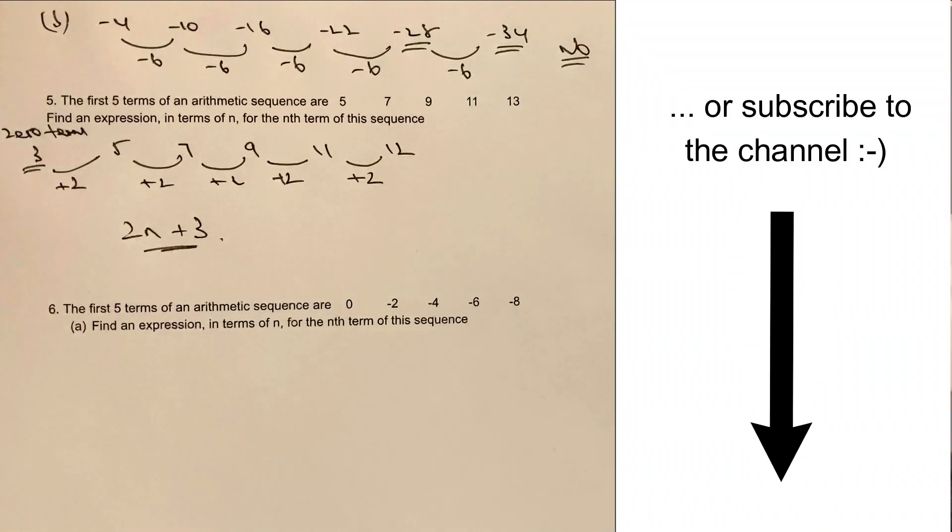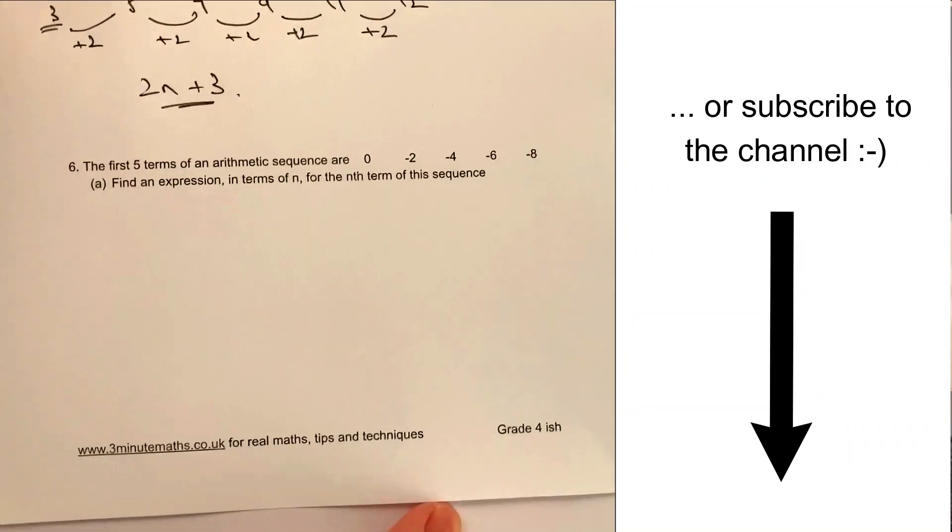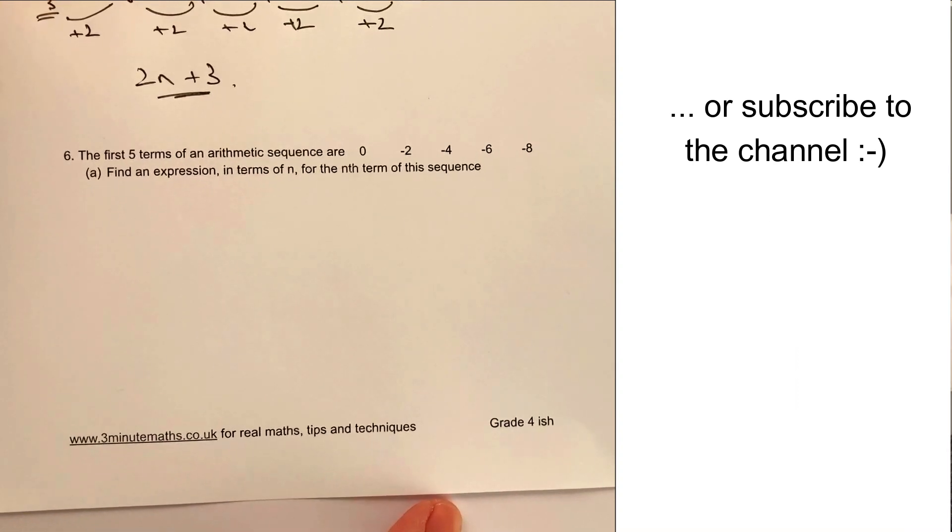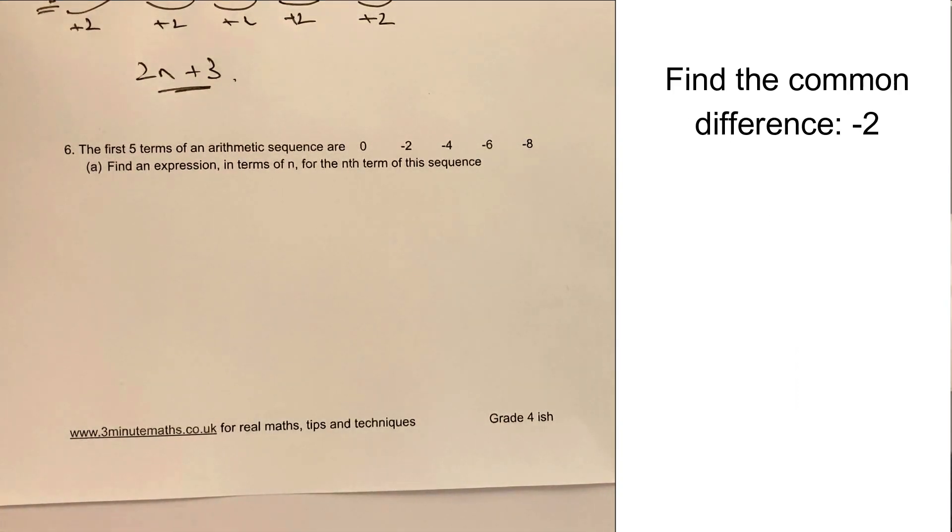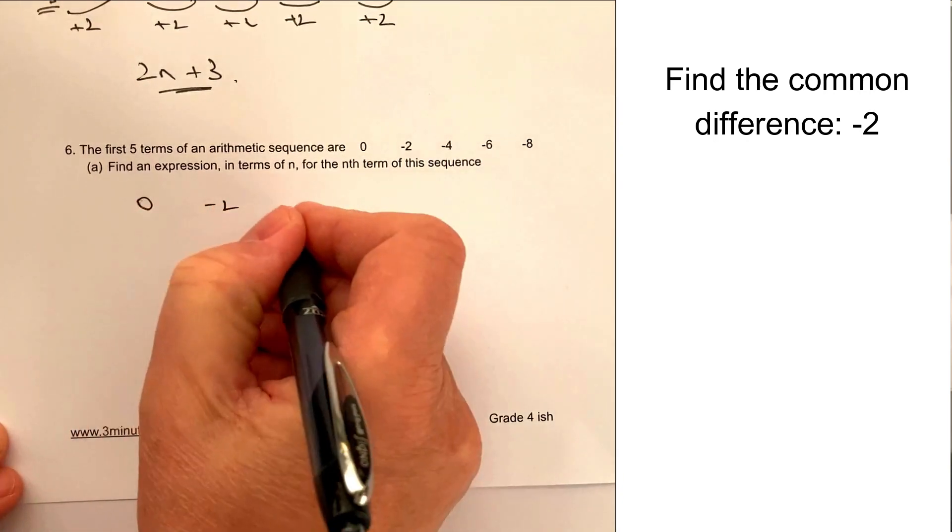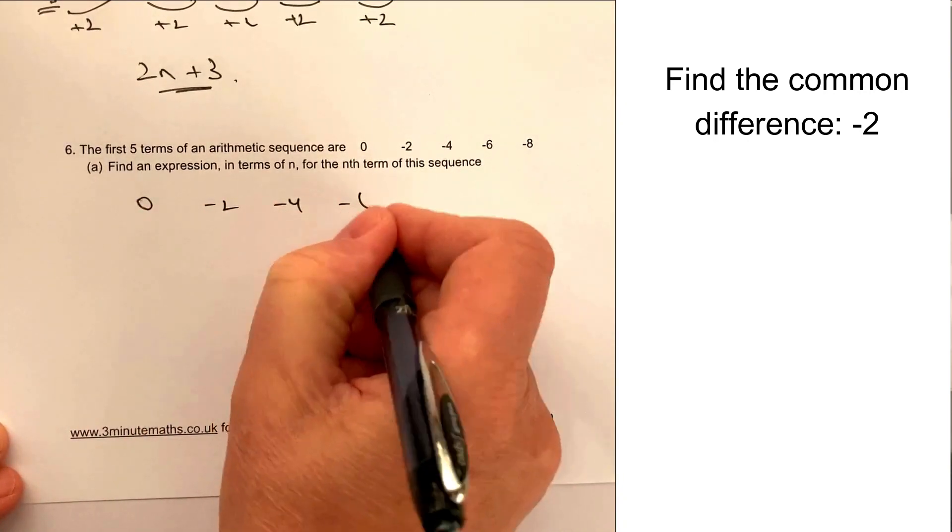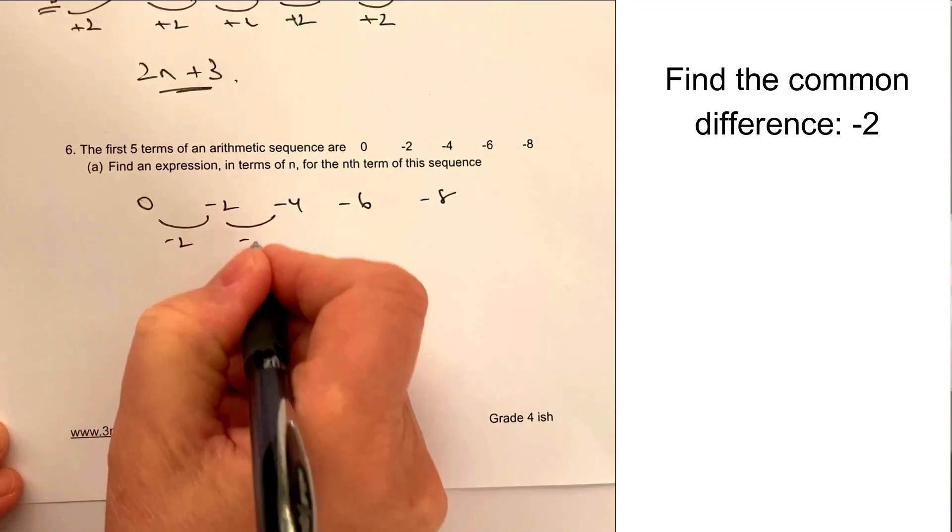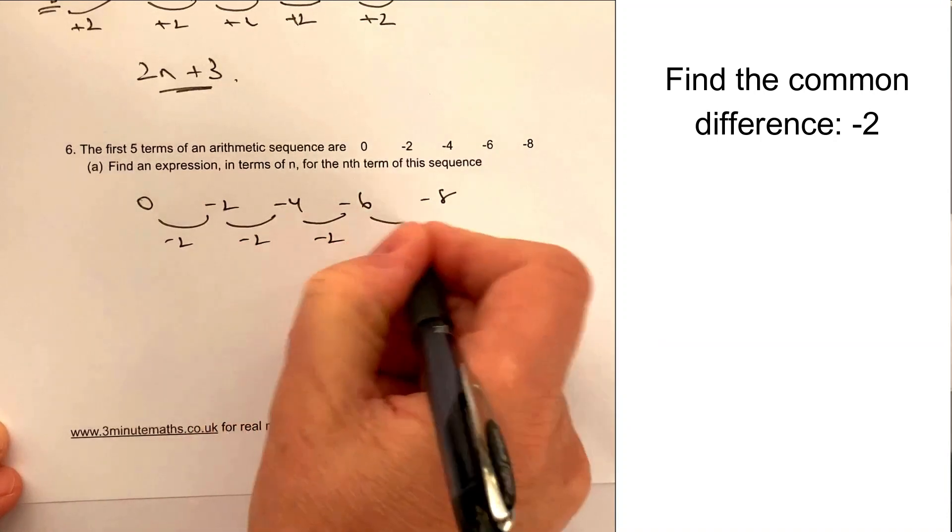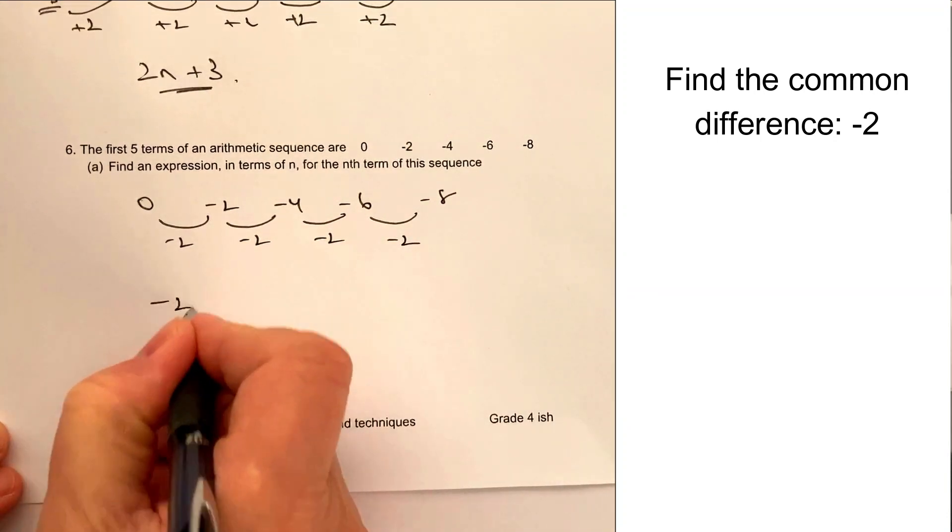So the very final question on this particular video is we're going to use exactly the same principle. First five terms are that. Find an expression. So basically, we've got 0, minus 2, minus 4, minus 6, minus 8. In each case, what we're doing is we're minusing 2. So we can write that as minus 2n. That's the first bit.